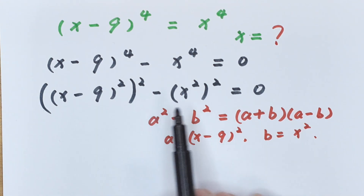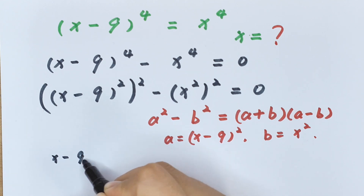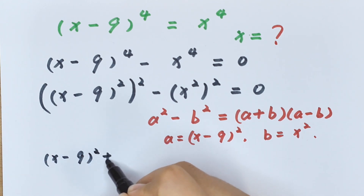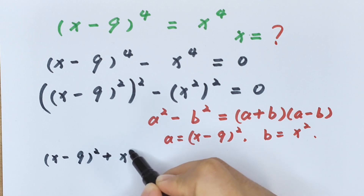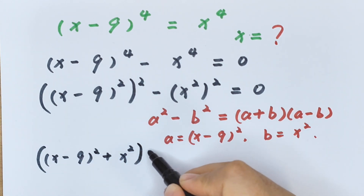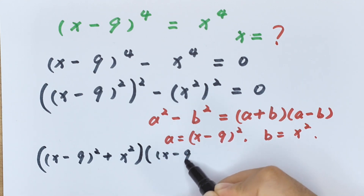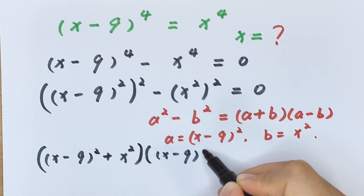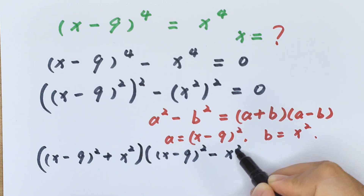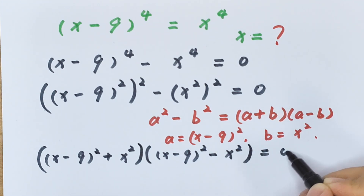Now our equation can be written as [(x minus 9) squared plus x squared] times [(x minus 9) squared minus x squared] equals 0.